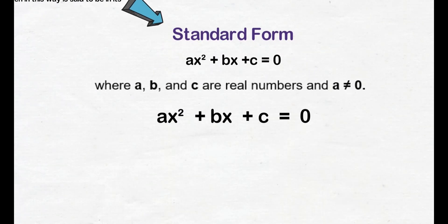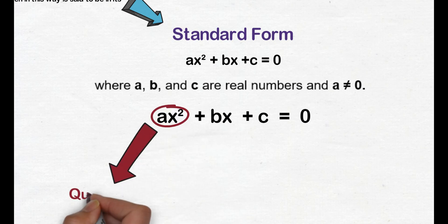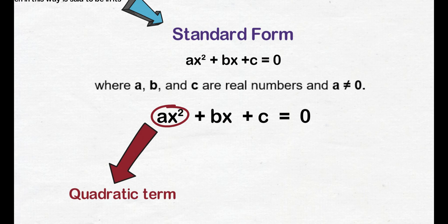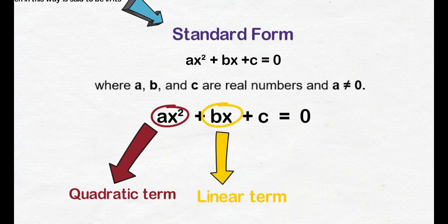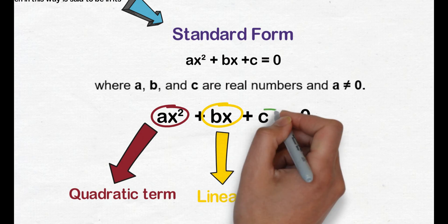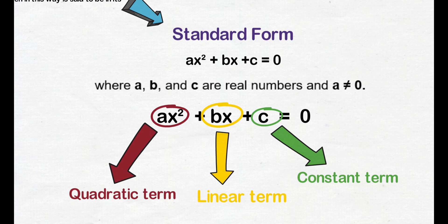In the equation, ax squared is the quadratic term — this is the term with a variable that has an exponent of 2. Bx is the linear term — this is the term with a variable that has an invisible exponent of 1. C is the constant term — this is the term with no variable. In standard form, the quadratic term comes first, followed by the linear term, then the constant term equals 0.